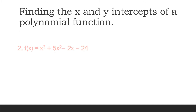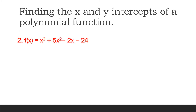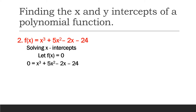For another example, f(x) = x³ + 5x² - 2x - 24. Solving for the x intercepts, we let f(x) = 0 and factor the expression x³ + 5x² - 2x - 24. The factors are (x + 3)(x - 2)(x + 4).